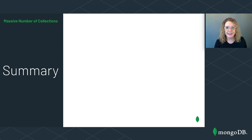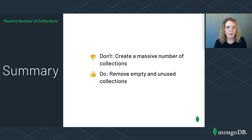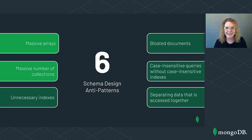Let's summarize the massive number of collections anti-pattern. Don't create a massive number of collections — each collection likely has a few indexes associated with it, and an excessive number of collections and their associated indexes can drain resources and impact performance. In general, try to limit your replica set to 10,000 collections. Do remove empty and unused collections. To summarize today's video: don't create massive unbounded arrays, and don't create a massive number of collections. Be on the lookout for part two in this series, where I'll discuss the next three schema design anti-patterns. See you soon!